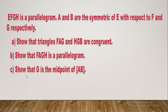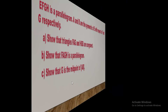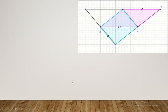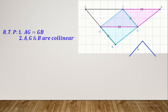Now let's move to part C: show that G is the midpoint of segment AB. To prove a midpoint, we need to show that BG equals GA. But in this figure, having two equal sides is not sufficient — the points must also be collinear. BG, G, and A should be on the same straight line.